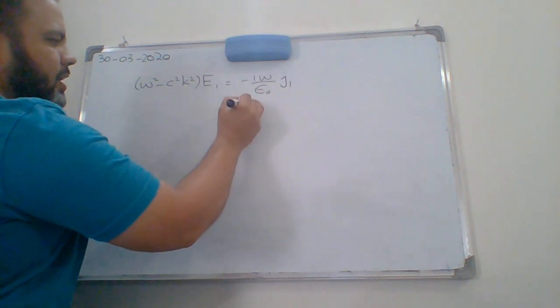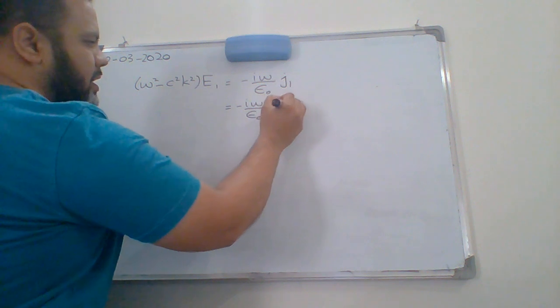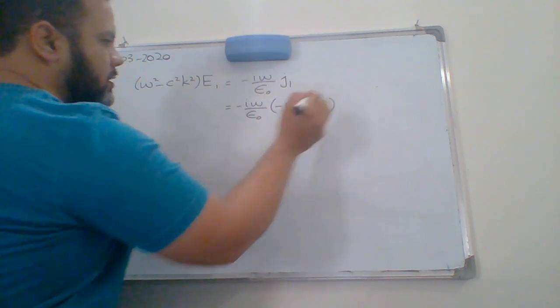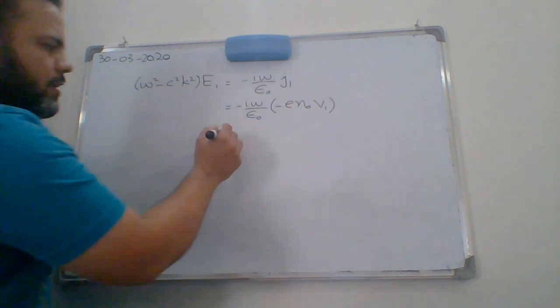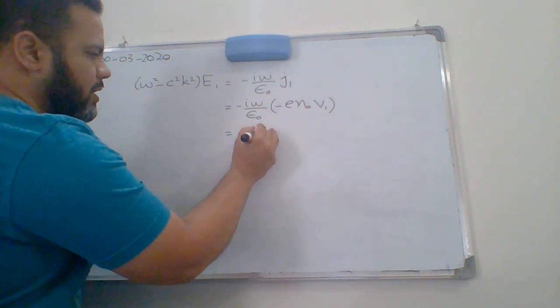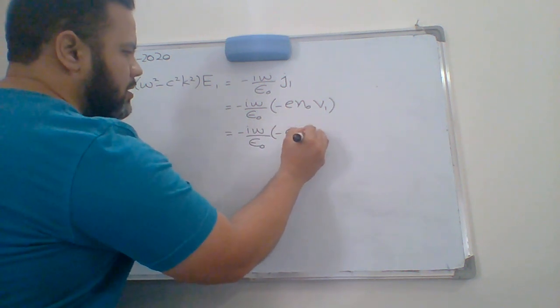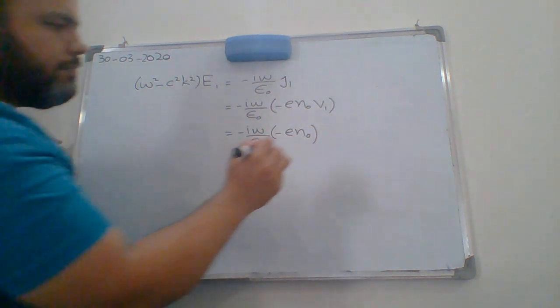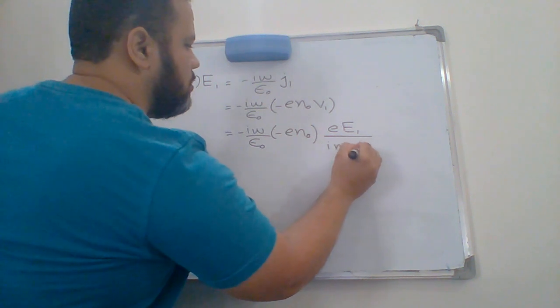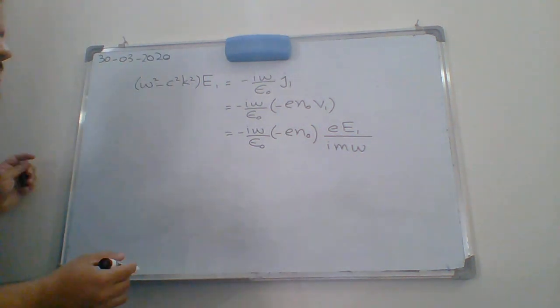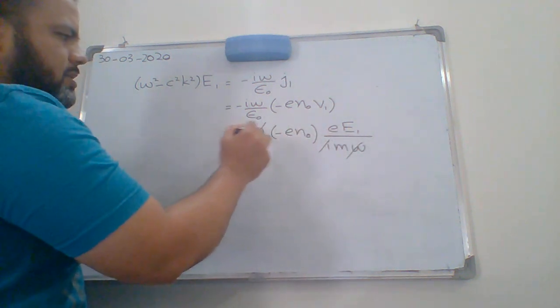Now, substituting the value of J1 that we have written as minus E n naught V1, we have minus iota omega by epsilon naught times minus E n naught V1. And then, substituting the value of V1 from the equation that we have: E E1 by iota M omega.